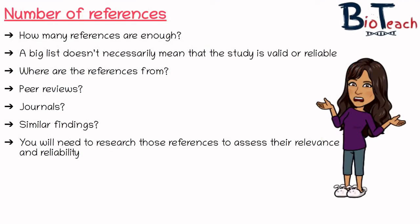Students often wonder how many references is enough, and I always say a big list doesn't necessarily mean the study is automatically reliable or valid — the references might be really old or from unreliable sources. You should check if the article has been peer-reviewed and if so, by whom. If it was published in a journal, that makes it pretty reliable as it would have gone through a number of official steps including peer review. Are there any studies with similar findings? If so, that might also add to the reliability and validity.